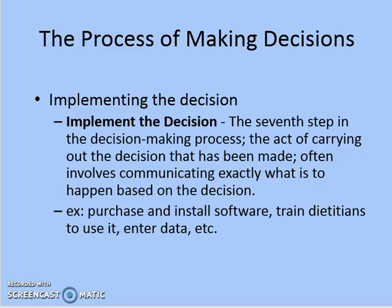The next stage is implementing the decision — the seventh step in the decision making process — the act of carrying out the decision that has been made. It often involves communicating exactly what is to happen. In our nutrient analysis example, this means purchasing and installing the software, training dietitians to use it, and entering the data. Once Option C is selected and implemented, users are trained on how to enter data and use the software.